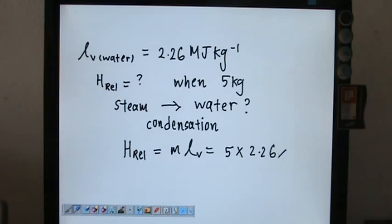Mega is 10^6. So we can calculate this to be 1.13 times 10^4 kJ, or to make it easier, 1.13 times 10^7 J.